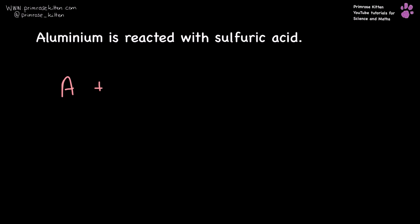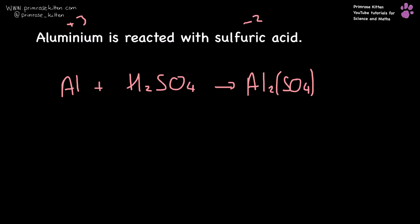Aluminium is reacted with sulfuric acid. We are going to get aluminium sulfate — aluminium is plus three, sulfate is minus two — so it's going to be Al2(SO4)3 plus hydrogen gas. Now if we balance that, I'm going to need a two in front of the aluminium, a three in front of the sulfuric acid, and a three in front of the hydrogen gas.